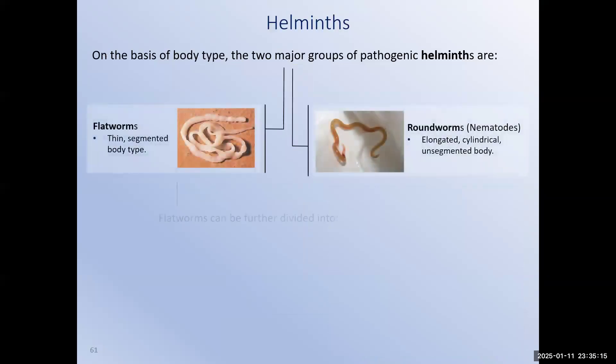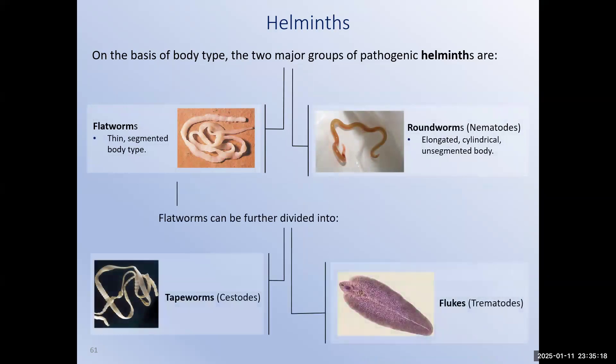Parasitic worms are classified based on body types, and unlike the protozoa, it is important to know a few of these classifications. We divide helminths into roundworms and flatworms. Roundworms are tubular and rounded — the earthworm in your garden is a roundworm. Flatworms are, you guessed it, flat. They have segmented bodies but can grow to enormous sizes. Flatworms can be further divided into tapeworms and flukes. It's the tapeworms that make the news when a 20-foot version is pulled out of somebody's GI tract.